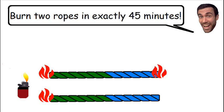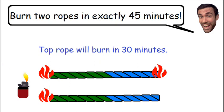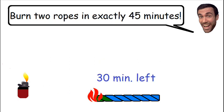What we are doing is doubling the speed in which the top rope burns. So instead of taking one hour to burn, the top rope will take 30 minutes to burn. So immediately after the top rope has completely vanished, exactly 30 minutes has passed.